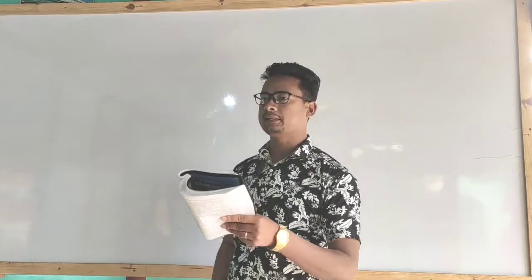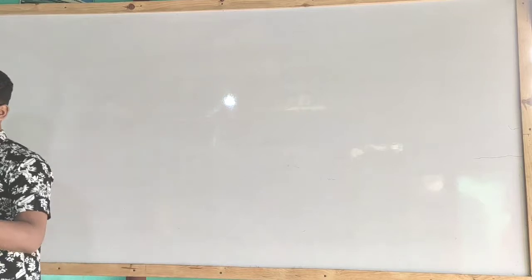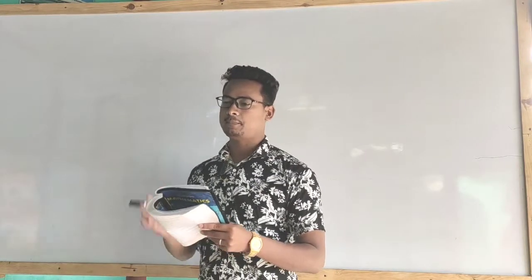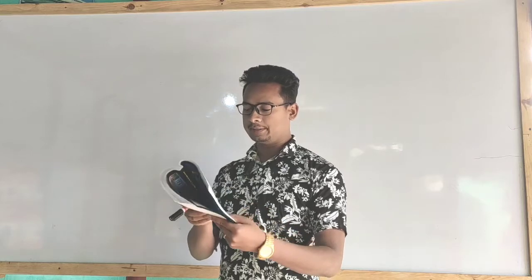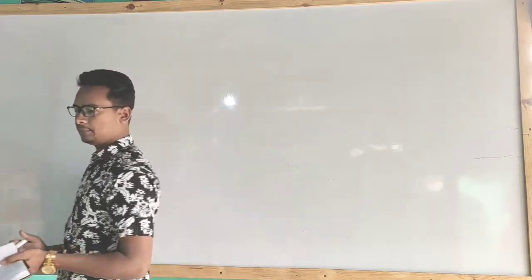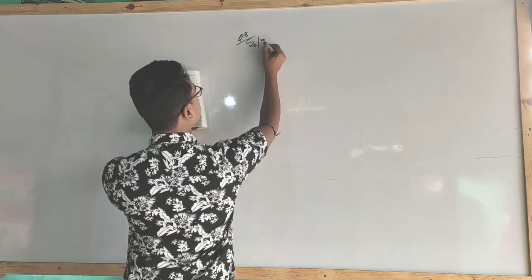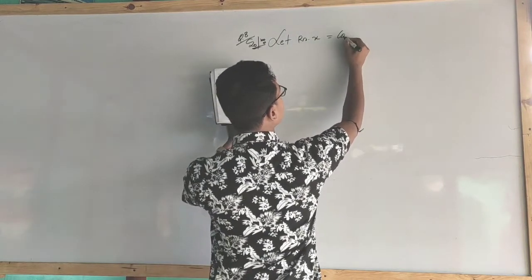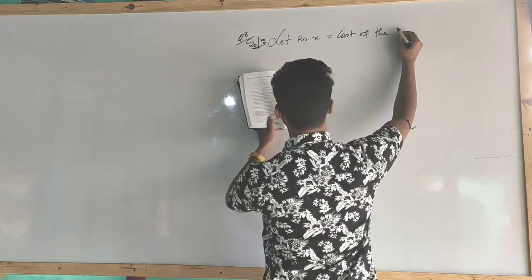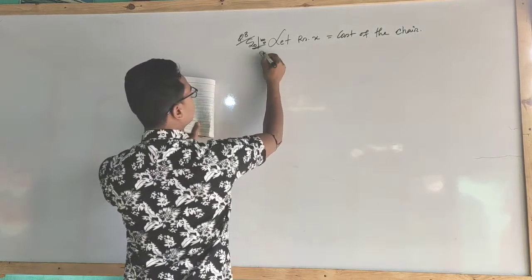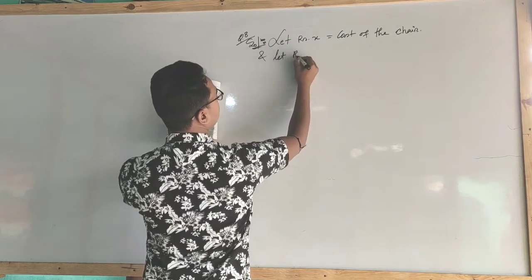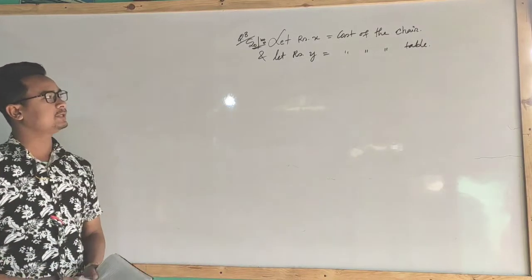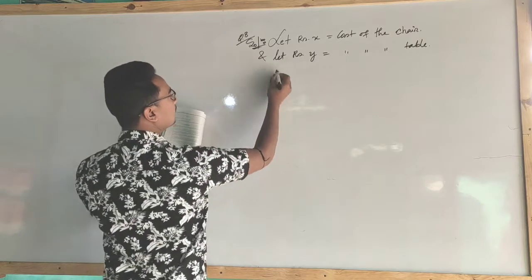Question number 8. Let rupees X be equal to the cost price of the chair (CRD) for the 100th round. And let rupees Y be equal to the cost price of the table.